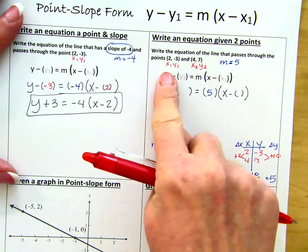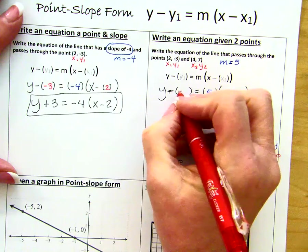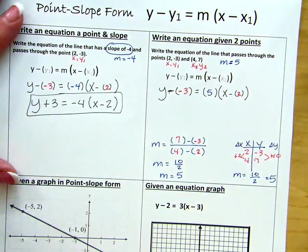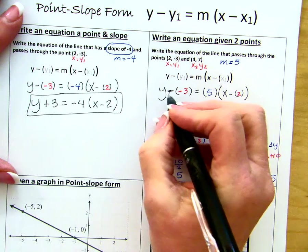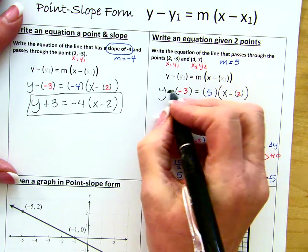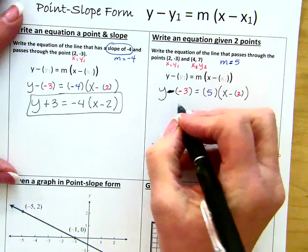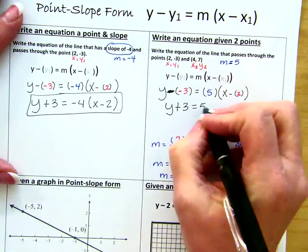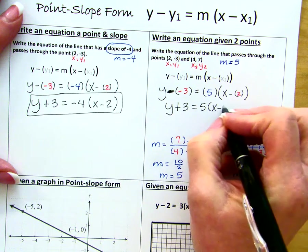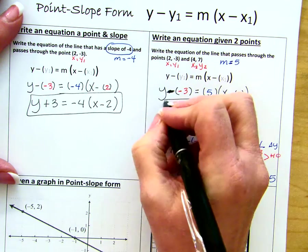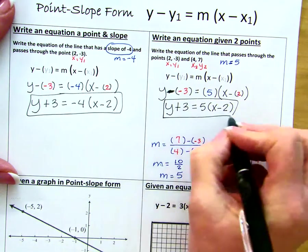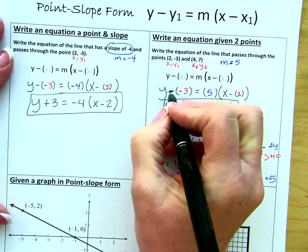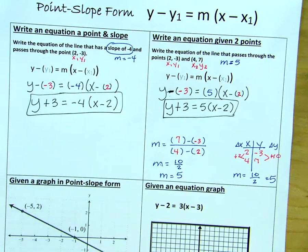And we're going to use the same point that we used before, because that ended up being the first point for this example. Then we simplify. Again, y minus a negative here. That is going to give you y plus 3. Our slope is 5. And we get x minus 2. That's a little bit better.